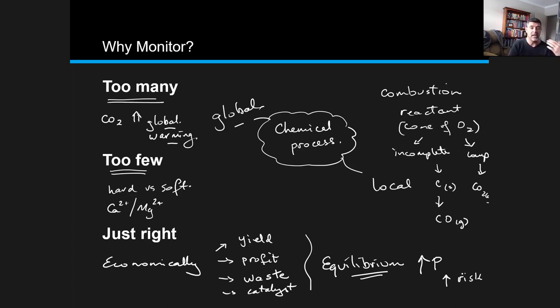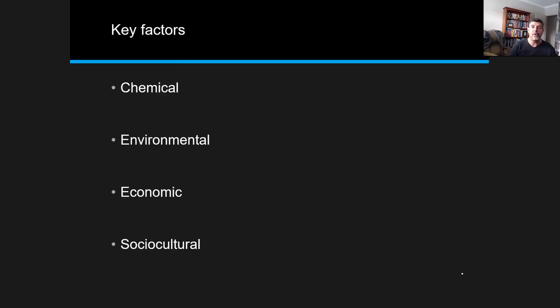So, each of these different processes needs to be looked at in a quite comprehensive way for us to be able to analyse a range of different factors associated with different chemical processes. There are always going to be four key considerations that we're going to need to think about whenever we are looking at any chemical process.